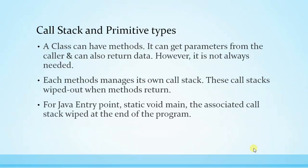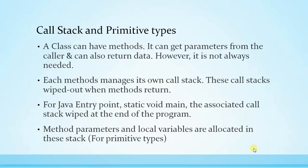For example, static void main is the program entry point. If we declare some variables inside static void main, they get allocated inside the stack frame associated with static void main. Once the function returns — meaning the program ends — the call stack associated with static void main gets released. Method parameters and local variables are all allocated into the stack frame associated with the method. In this example we will see how primitive types are allocated in the stack frame and how they get released.